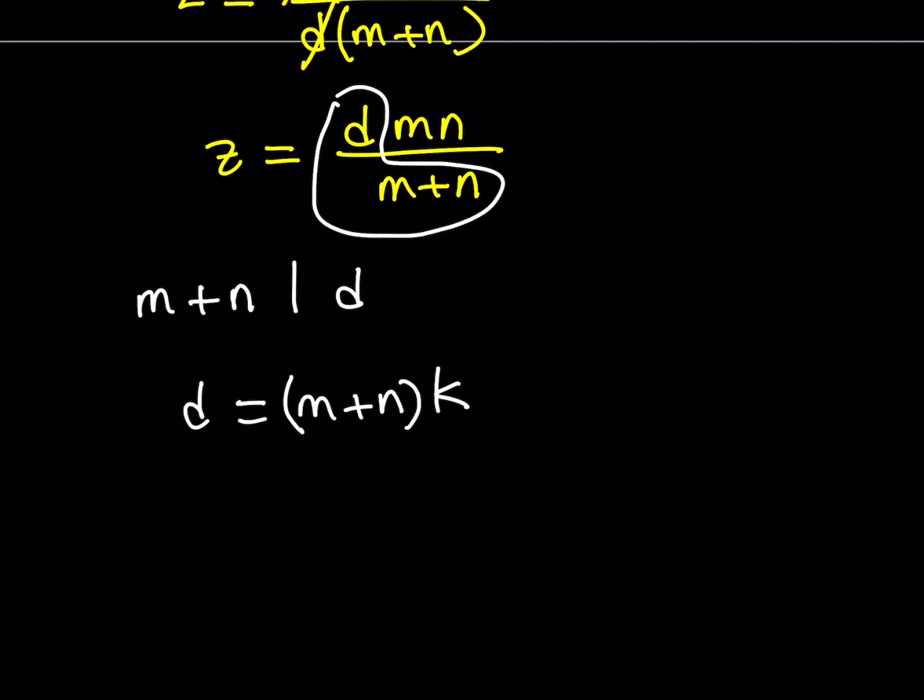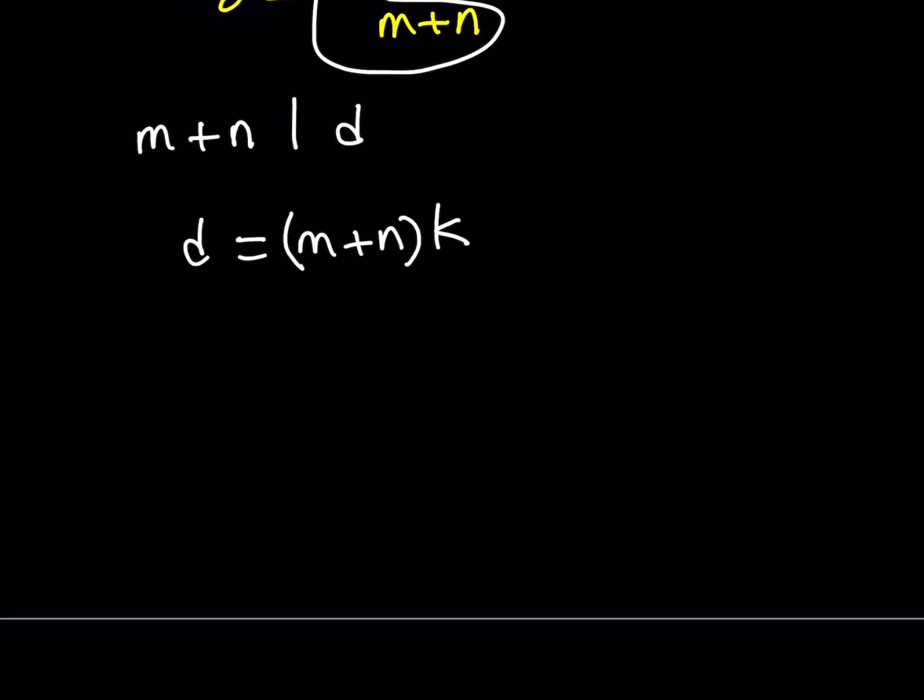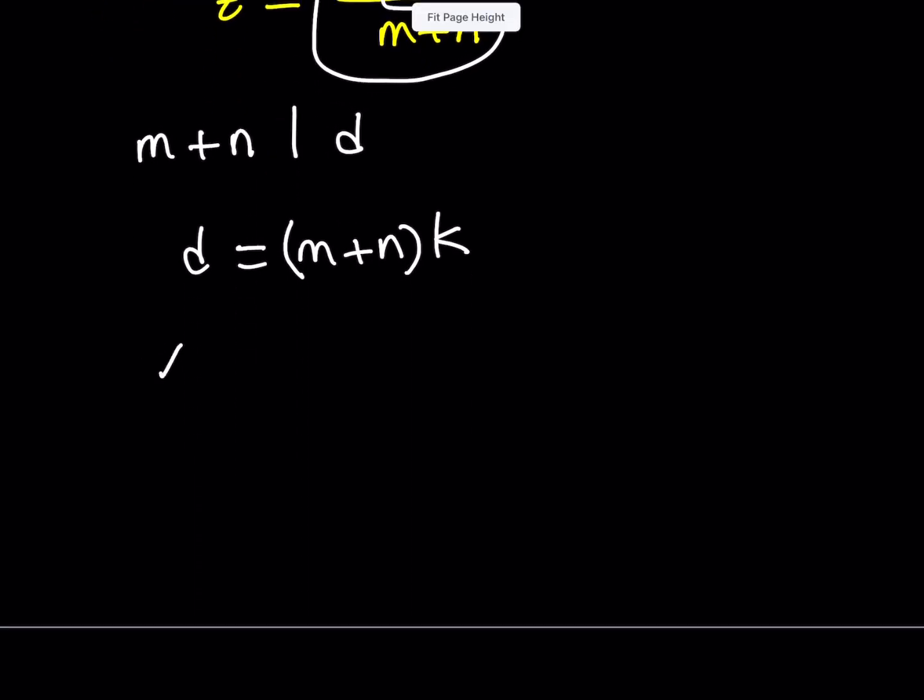Well, we do have two equations for x and y. Remember, we said that x equals dm and y equals dn. So, what we can do is we can actually go ahead and use this. Remember, x equals dm. If you replace d with this, you get something like m plus n, k multiplied by m,